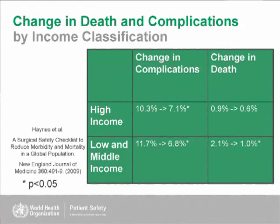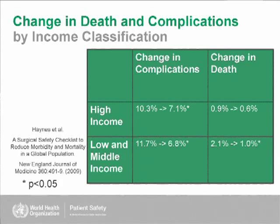You might ask, does this really work in high-income countries? Here in Boston, where we already have relatively high standards of care, are we really seeing an impact from these pretty basic principles? We've broken it down into high-income and low- and middle-income countries. We see a statistically significant difference in complications. In high-income regions, we don't see statistical significance in death rates, but there's a trend towards improvement from 0.9% to 0.6%. So few deaths occur in high-income countries that with larger numbers, we may be able to show a significant difference.